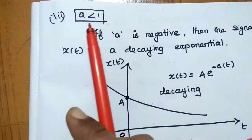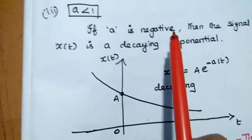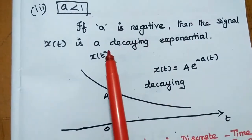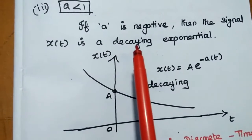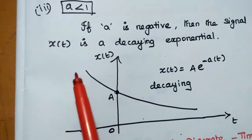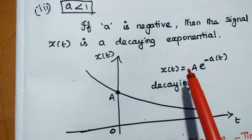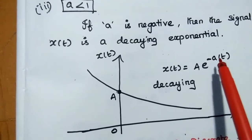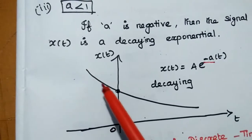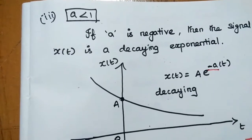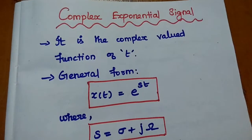If 'a' is less than 1, that means 'a' is negative, then the signal is a decaying signal — we call it an exponentially decreasing signal. For this case, x(t) = A·e^(-at). Whenever the exponent is negative, it is an exponentially decreasing signal.